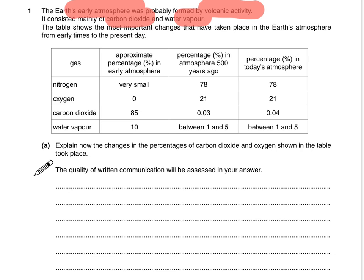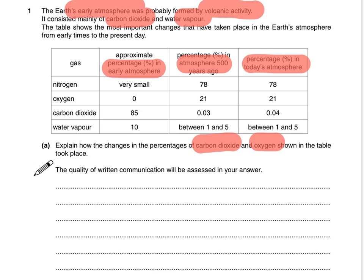They're talking about a table that shows important changes that have occurred: the early atmosphere, 500 years ago, and today's atmosphere. What it's telling us to do — and this is important because otherwise we might end up doing things we don't need to — is explain how changes in the percentage of carbon dioxide and oxygen took place. So that means we can ignore nitrogen and water vapor. Otherwise we're wasting our time.